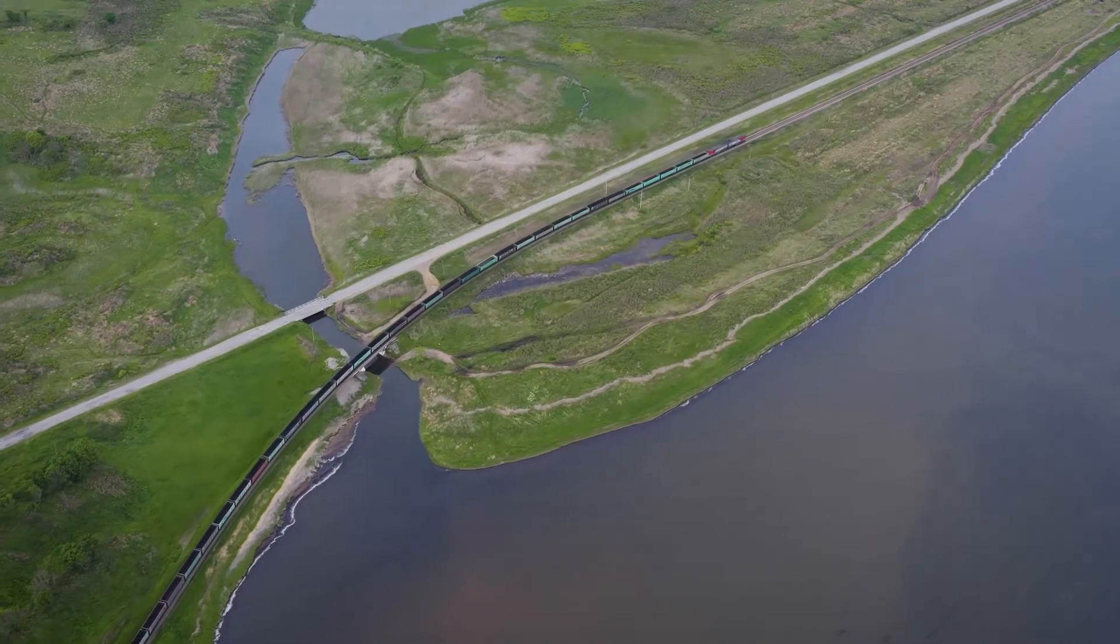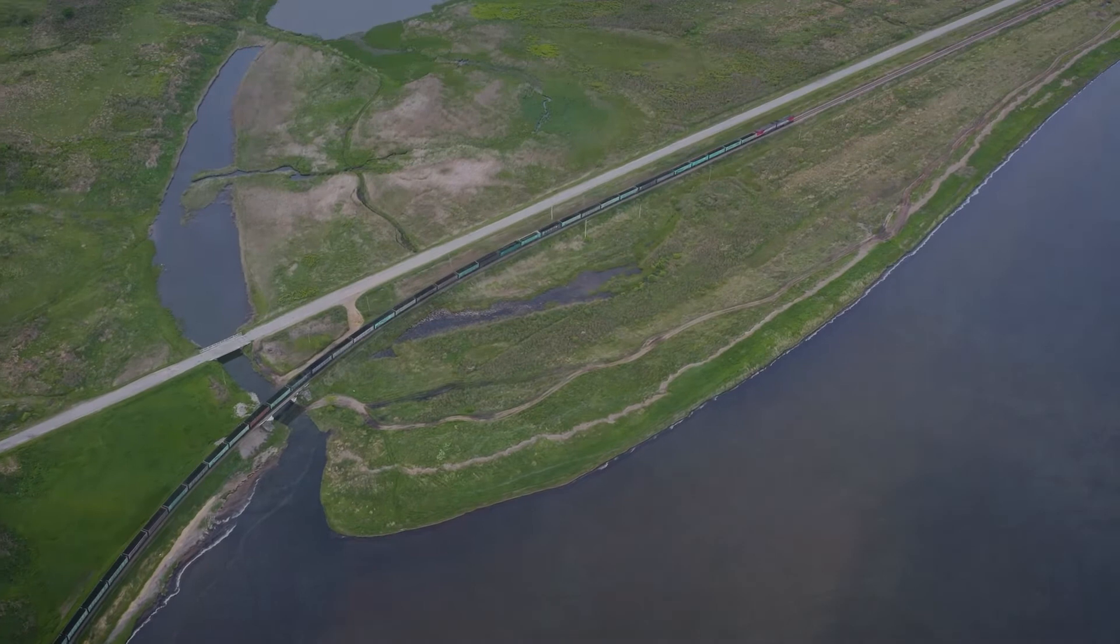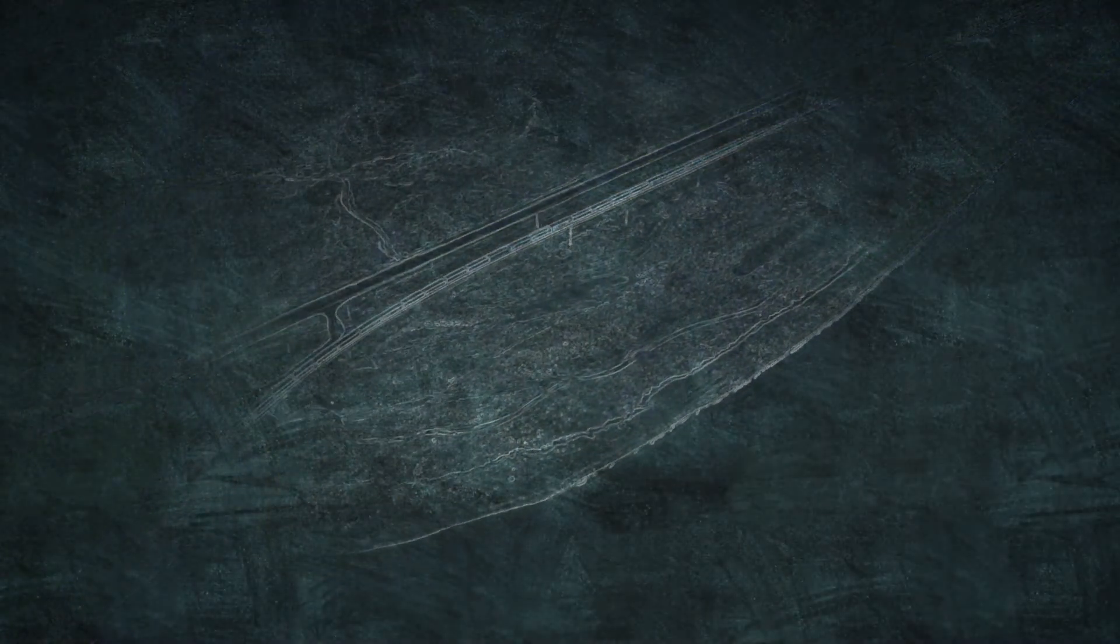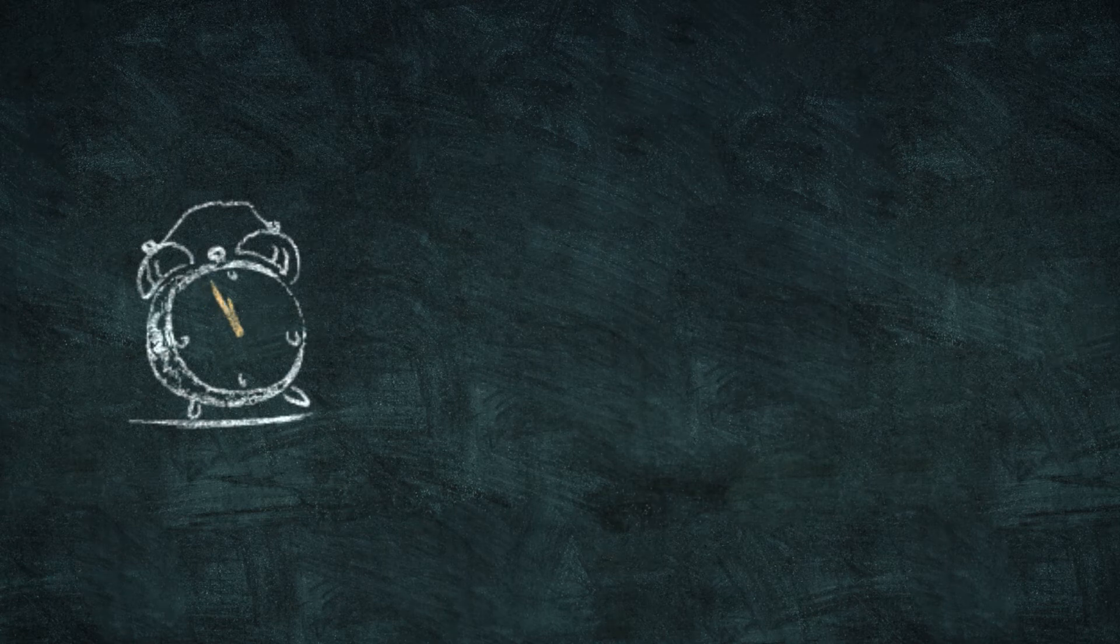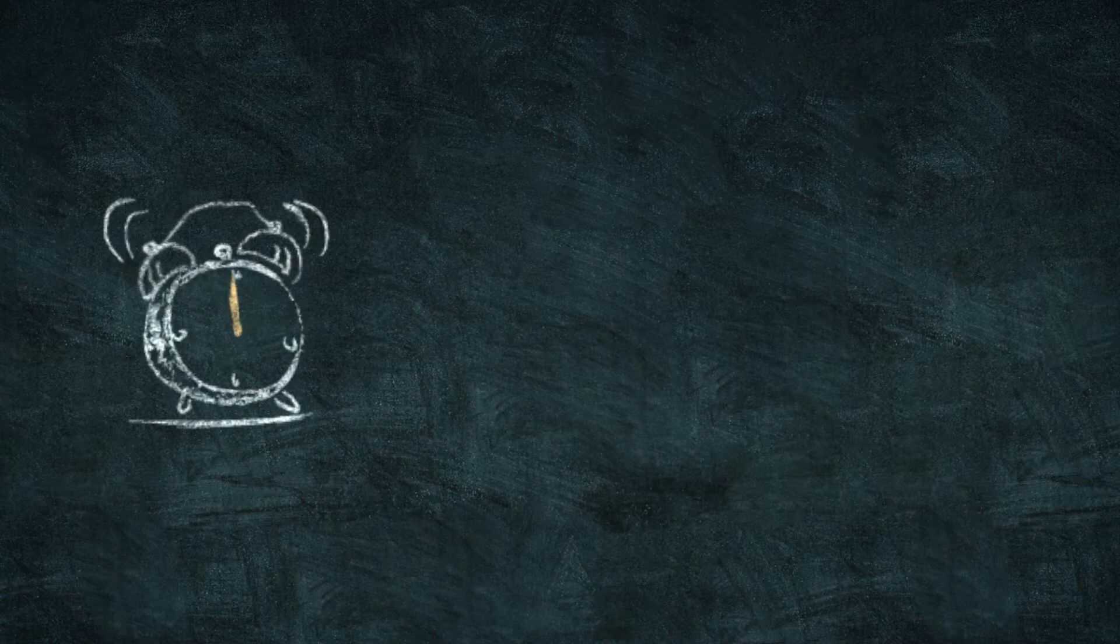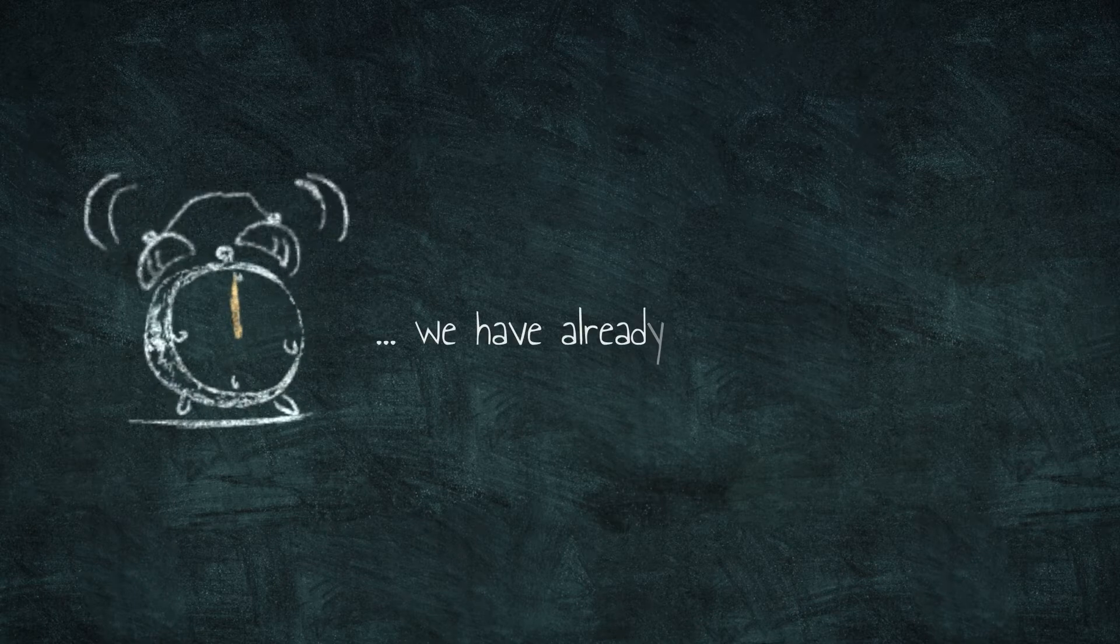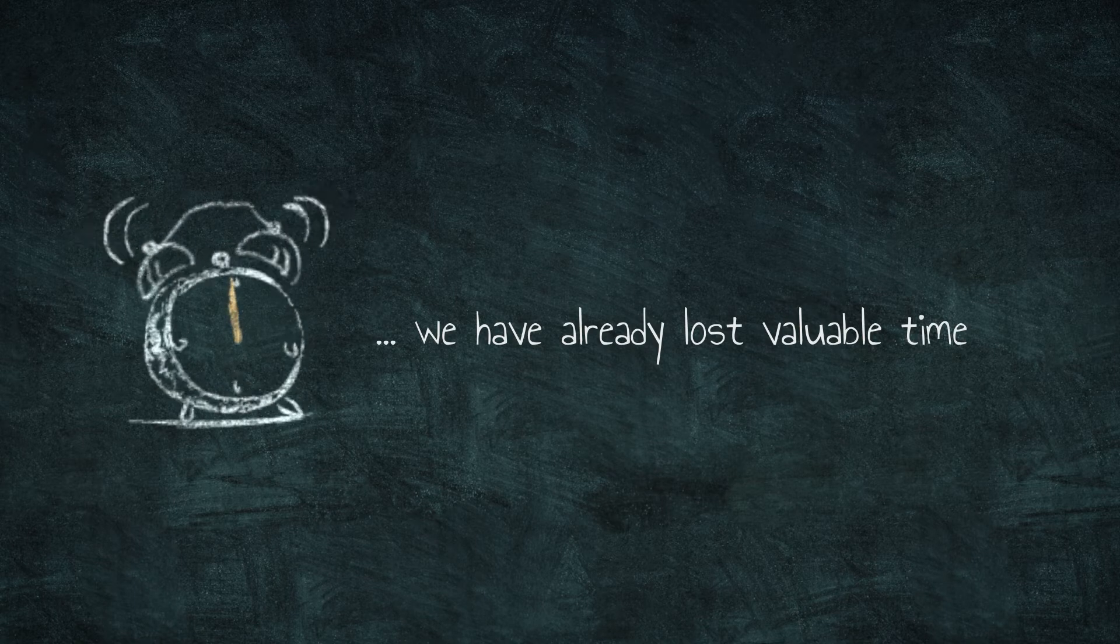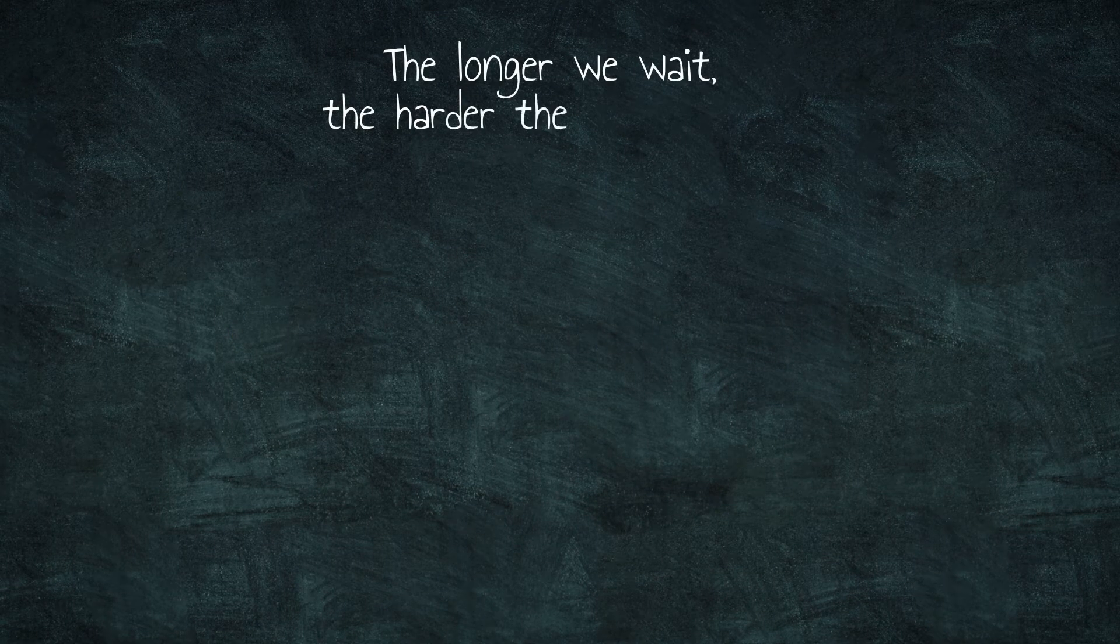Currently, we are on a course for a temperature rise of at least 3 degrees by the end of this century. And what exactly does this mean? Quite simple. We have to reach net zero carbon dioxide emissions as quickly as possible. We've already lost valuable time. And the longer we wait, the harder that task will be.